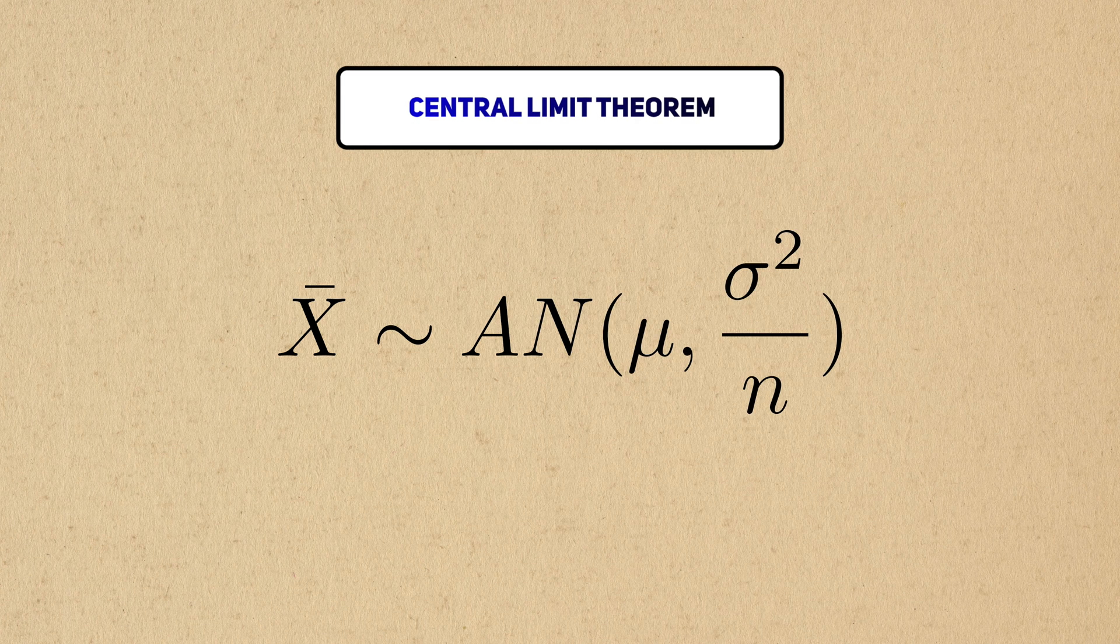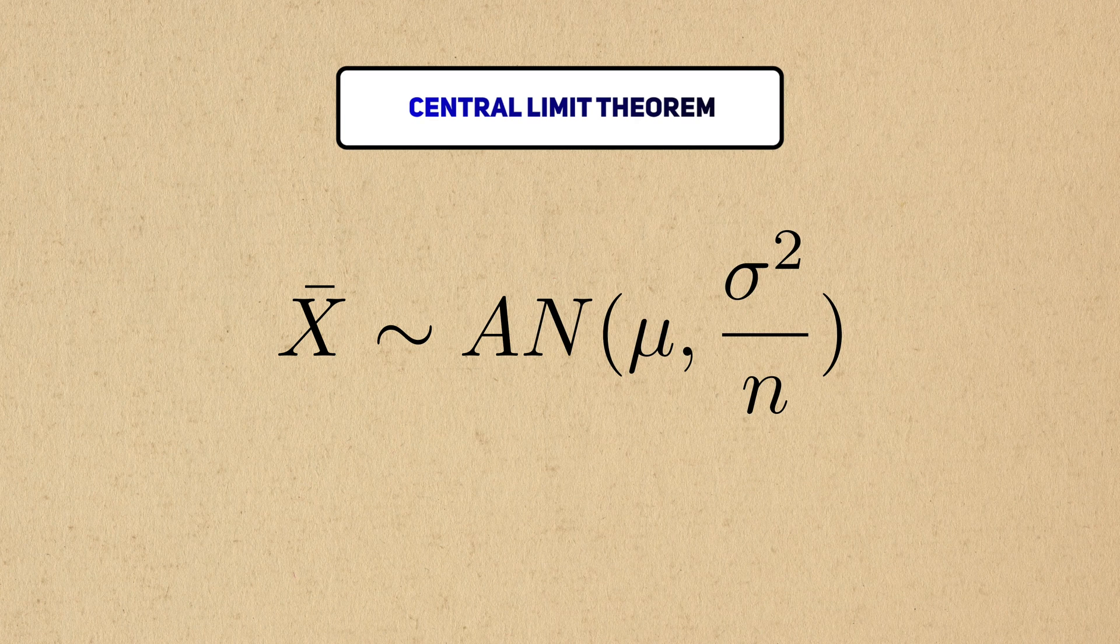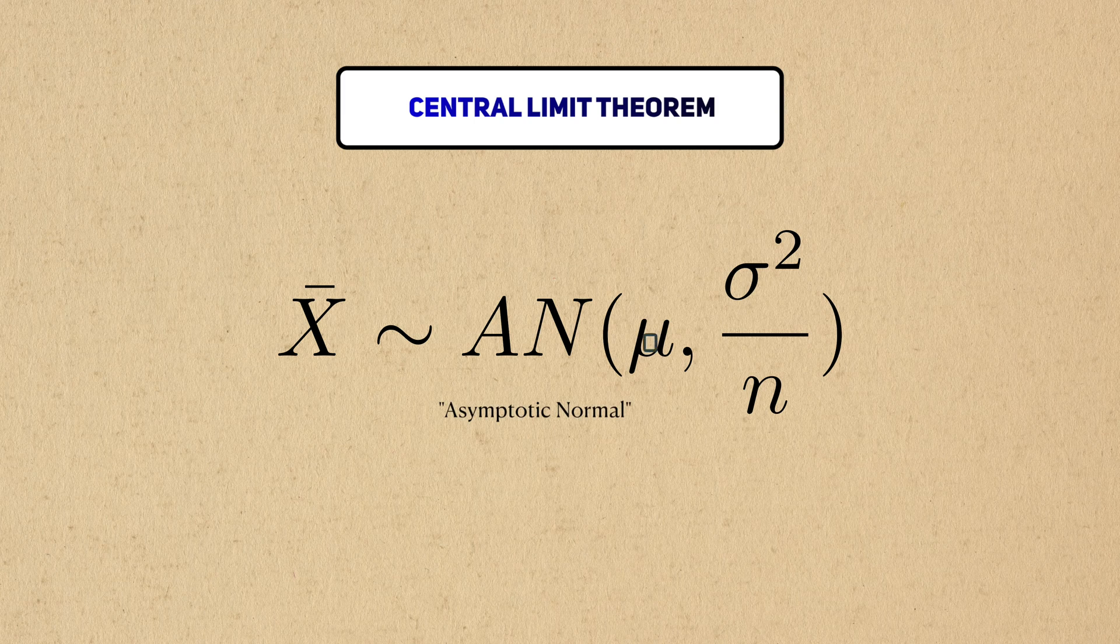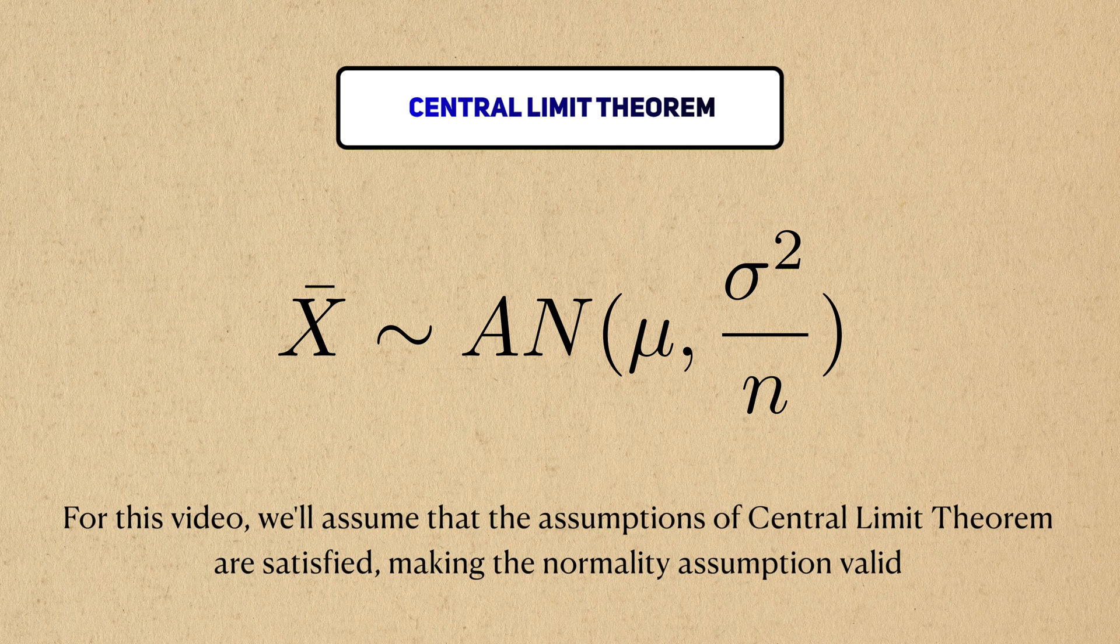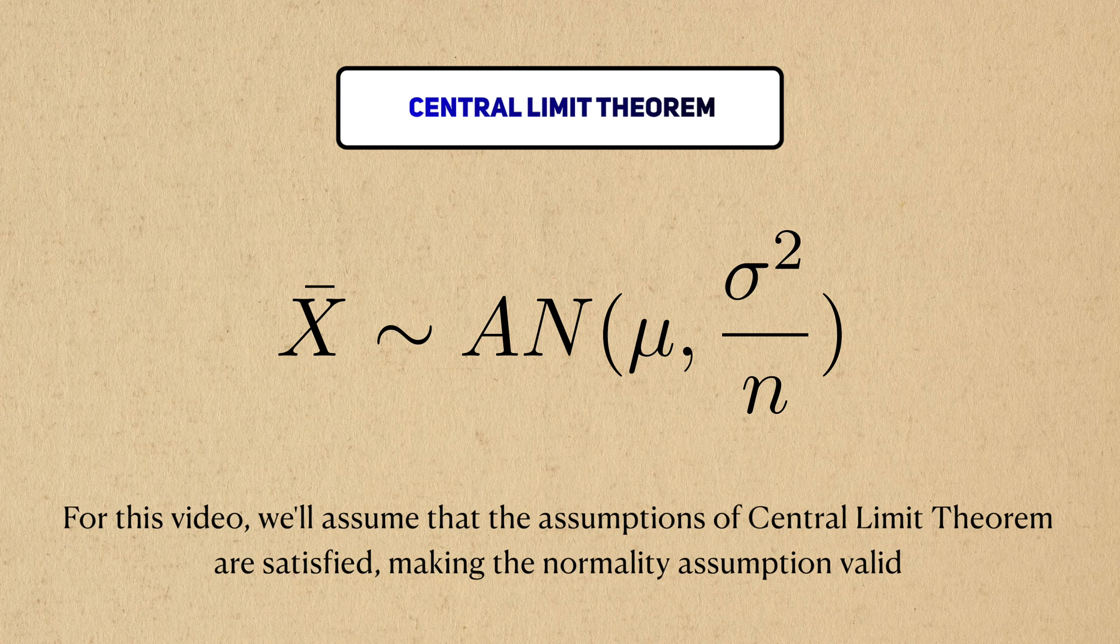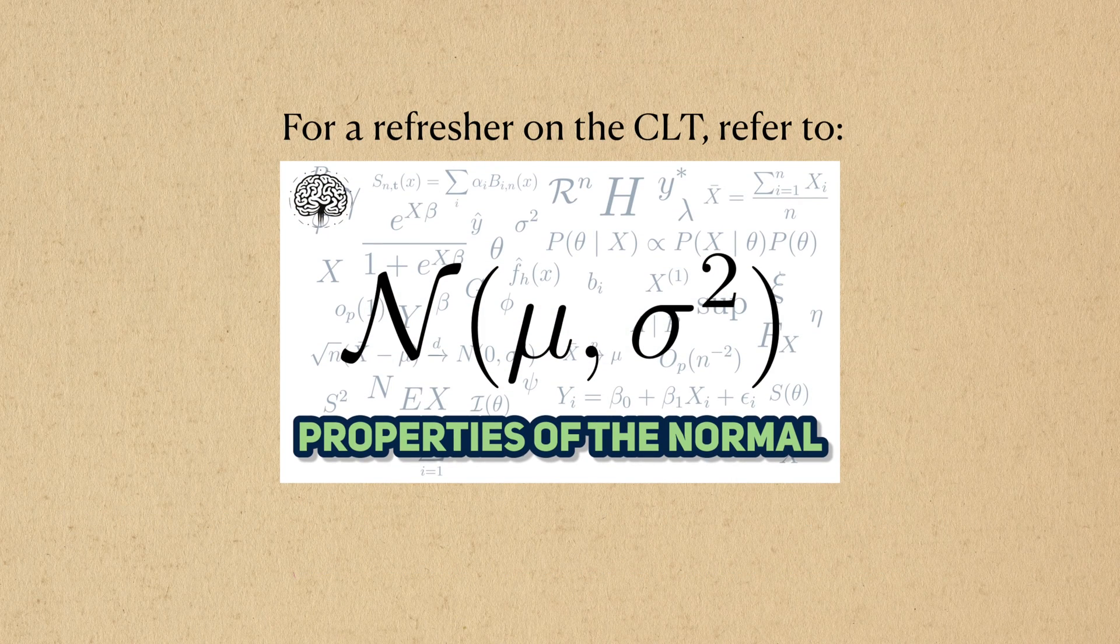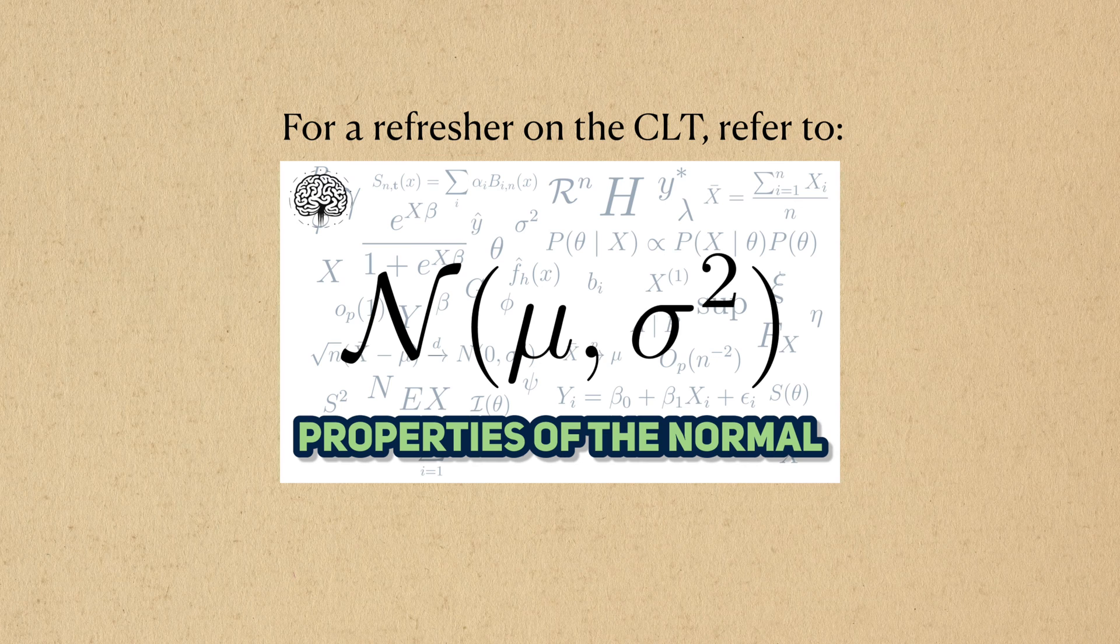The last ingredient we need is the sampling distribution of the sample mean, since we'll need it to figure out the null distribution. Thanks to the central limit theorem, if we collect a lot of data, then the distribution of the sample mean will be approximately normal, where its mean is the population mean and its variance is the population variance divided by the sample size. For the purposes of this video, we'll assume that all the assumptions of the central limit theorem are valid, but if you need a refresher, you can refer back to the normal distribution training video.